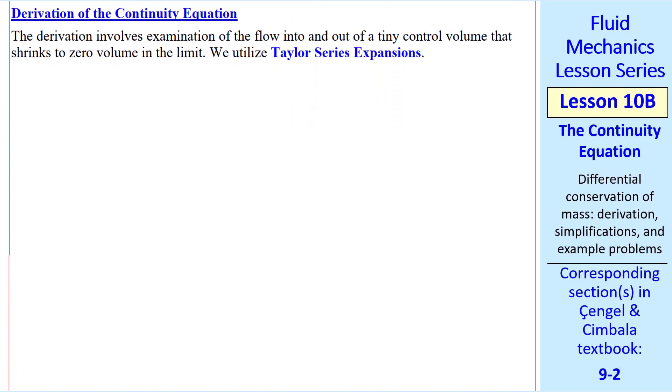The derivation involves examination of the flow into and out of a tiny control volume. We'll shrink that control volume to zero in the limit. We utilize Taylor series expansions. Consider x, y, z coordinates, and I'll attempt to draw a three-dimensional control volume.